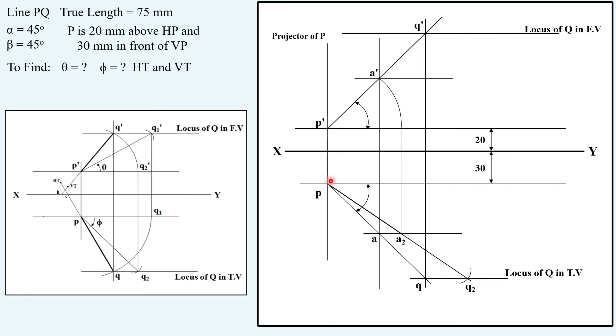Now you have to take 75 mm in your compass. Keeping at Q', draw an arc on this locus so you can locate the true length here, and you have to join it. The name of this point here will be Q1'.